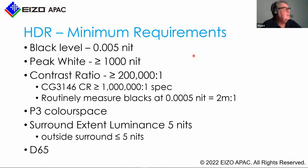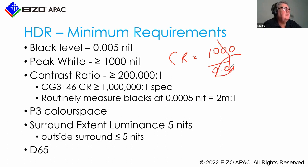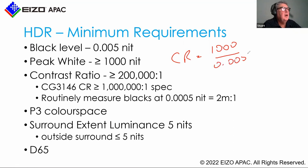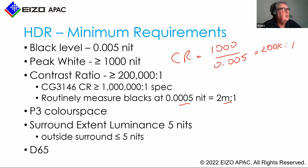For minimum requirements, we have a black level of 0.005 nit and a peak white of 1000 nits, giving a contrast ratio of 200,000 to one — that's 1000 divided by 0.005. When I measure the CG3146 for calibration, the spec is 1 million to one or greater. I commonly measure the CG3146 at 0.0005 nit, giving an effective contrast ratio of 2 million to one — it certainly meets those requirements.